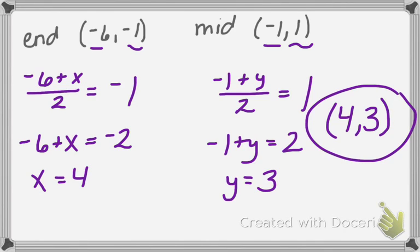So if you kind of think about that, going from negative 6, negative 1, to 4, 3, that the negative 6 to the 4 in the middle is going to be about negative 1. From negative 1 to 3, our middle is going to be 1. So just kind of do a quick check. So we'll do one more of those.